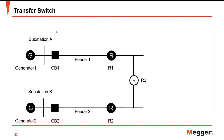Transfer switch: if a fault occurs in a portion of feeder one, circuit breaker one will trip and the whole feeder one will be de-energized. Recloser one will open in preparation for load shifting, and recloser two will be closed, energizing the end portion of feeder one. This can be done manually or automatically in a smart or self-healing grid.